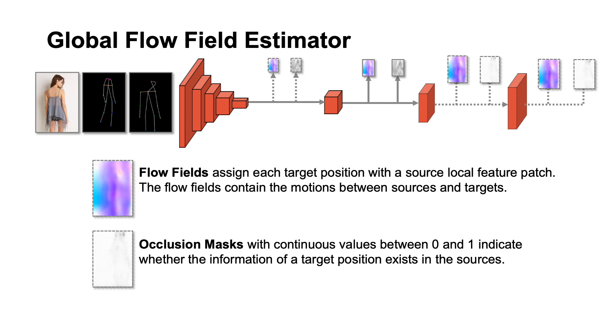The flow fields predict the deformation between the source and target. They contain coordinate offsets of seeking which position in the source image could be sampled to generate the target image. The occlusion mask with continuous values between 0 and 1 indicates whether the information of a target position exists in the source.